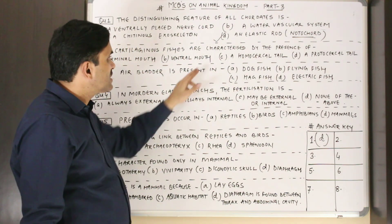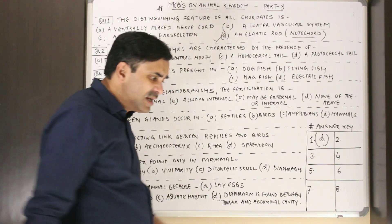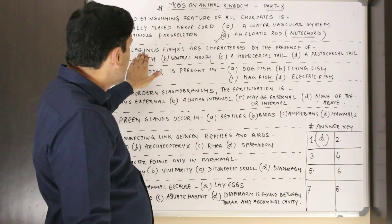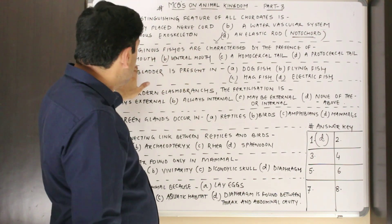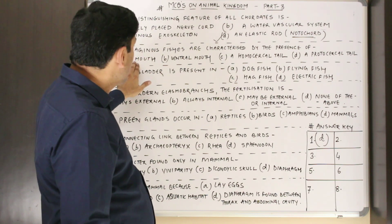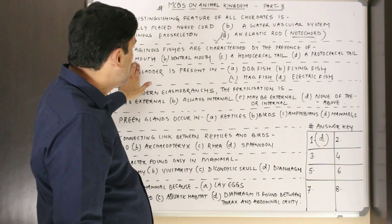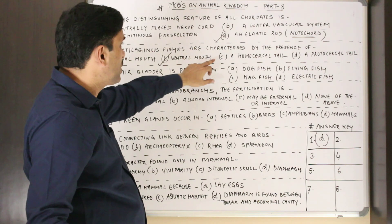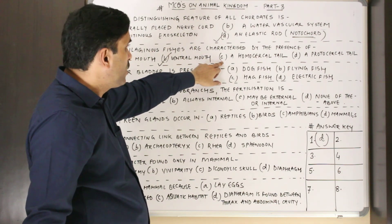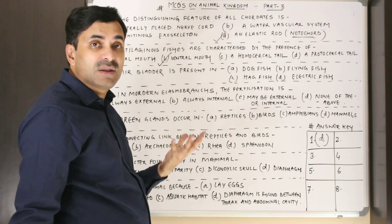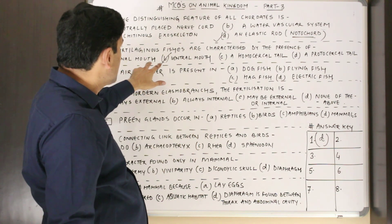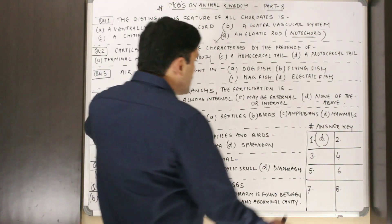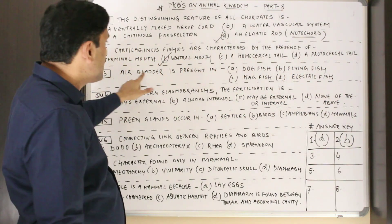Question number two: cartilaginous fishes are characterized by the presence of? Fishes are classified into cartilaginous fishes and bony fishes. Terminal mouth is a feature of bony fishes, not cartilaginous fishes. Cartilaginous fishes are characterized by the presence of a ventral mouth, so option B is correct. A homocercal tail is found in bony fishes. Question number two answer: B.